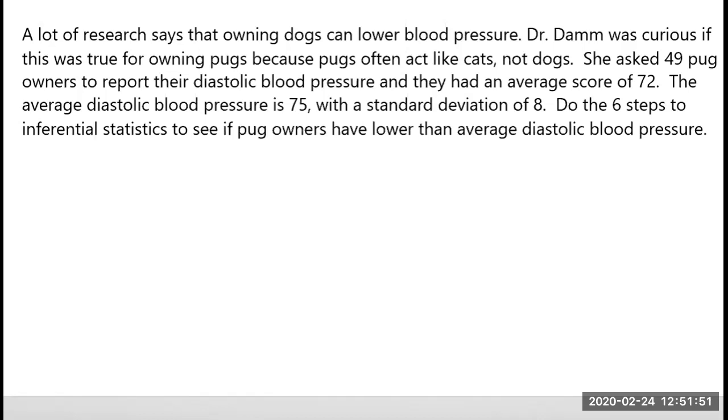She asked 49 pug owners to report their diastolic blood pressure, and they had an average score of 72. The average diastolic blood pressure is 75, with a standard deviation of 8. Do the six steps to inferential statistics to see if pug owners have lower than average diastolic blood pressure.